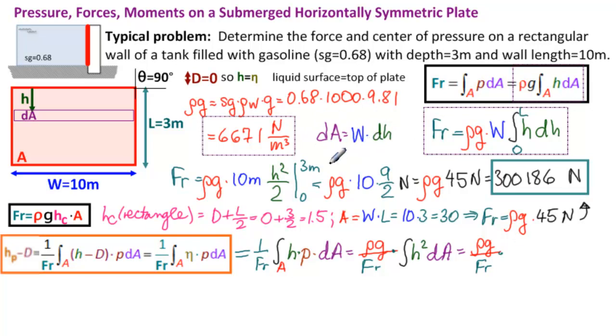And so we have ρg over our resultant force. dA is the same as before. W, so that comes out front. W times the integral of H squared dH. And now we're interested in where H goes from. H goes again from 0 to L. From 0 to L. So this is our integral for HP.